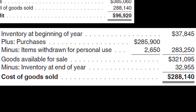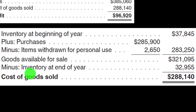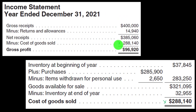In the cost of goods sold calculation: beginning inventory of $37,845 plus purchases, then subtract items withdrawn for personal use, giving net purchases of $283,250. Adding beginning inventory gives goods available for sale of $321,935. Subtracting ending inventory gives cost of goods sold of $288,140. This figure on page two of Schedule C should tie into cost of goods sold on page one of Schedule C.